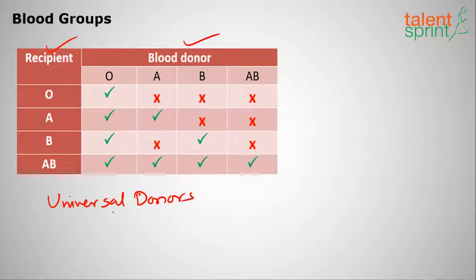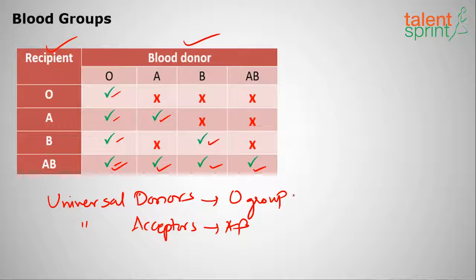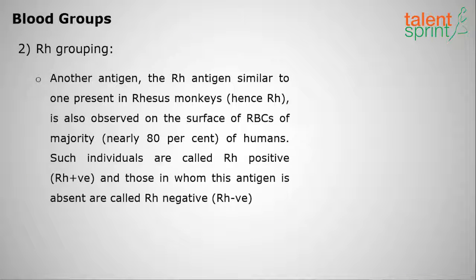Universal donors are O group people, as they can give blood to everyone. Universal acceptors are AB group people, as they can take blood from everyone. Group A can give blood only to A, and group B can give only to B. Universal donors are O group and universal acceptors are AB group.